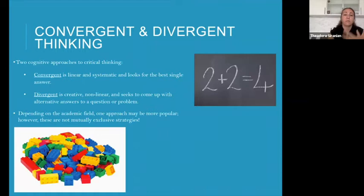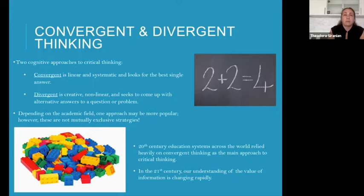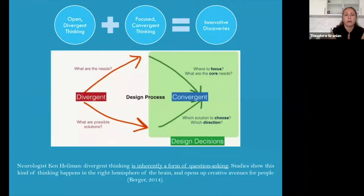In the 20th century, especially in the West, educational systems began to rely heavily on convergent thinking as the main approach to critical thinking and education. That's changed a lot in the 21st century and is continuing to change exponentially, because our entire understanding of the value of information is changing. I wanted to give you a couple more visuals thinking about the way you can use divergent and convergent thinking together.